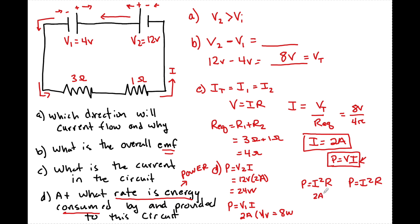So we have 2 amps squared times 3 ohms, and we're going to have 2 amps squared times 1 ohm. Four times three is 12, and then four times one is 4.